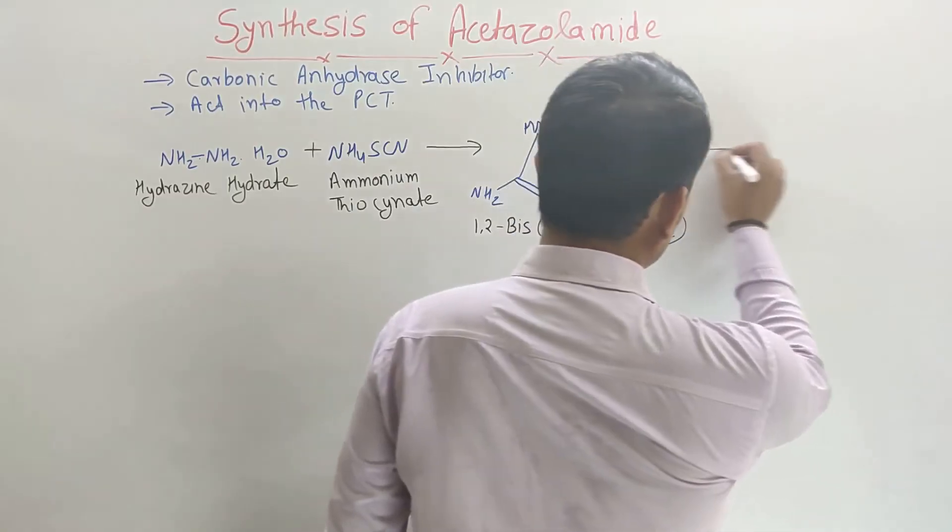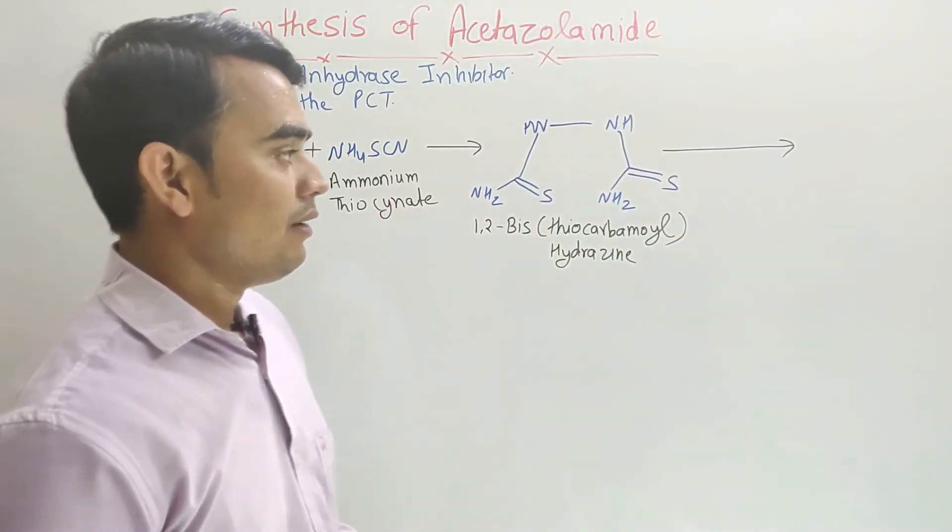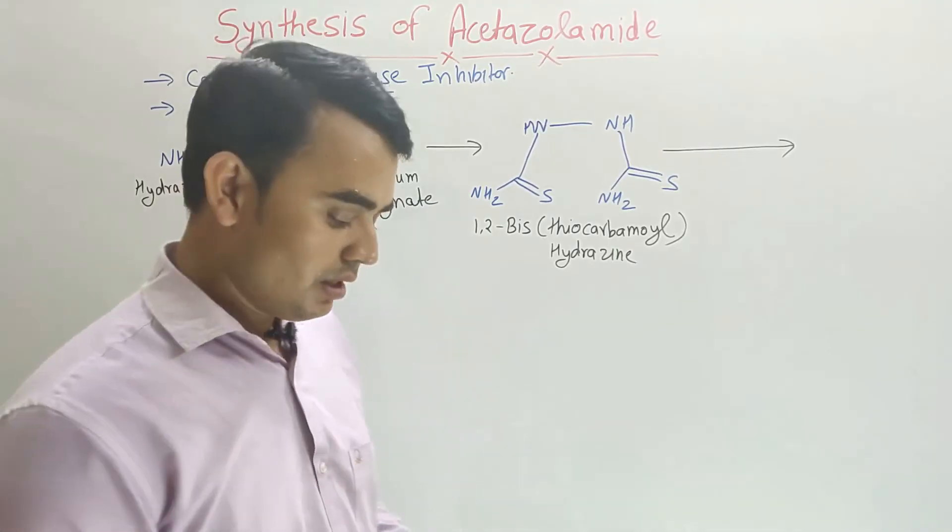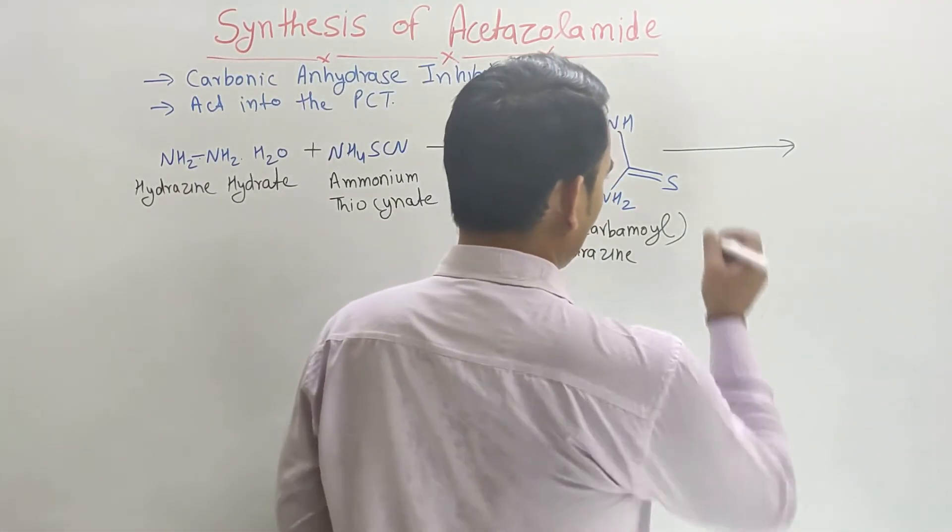Now when on this 1,2-bis-thiocarbamoyl hydrazine, phosgene gas is passed, then it causes the cyclization. So by the cyclization in the presence of phosgene.